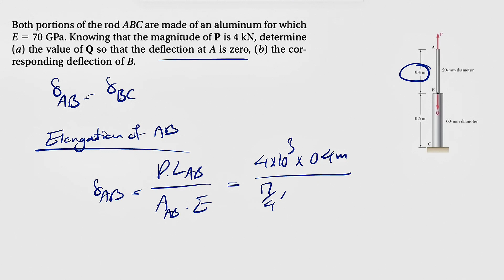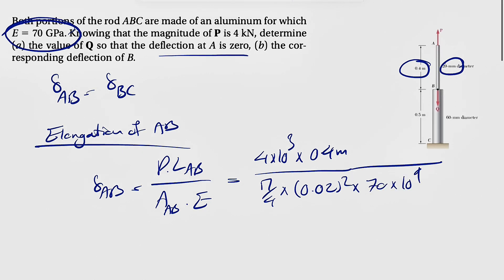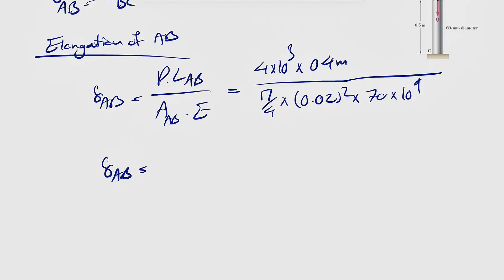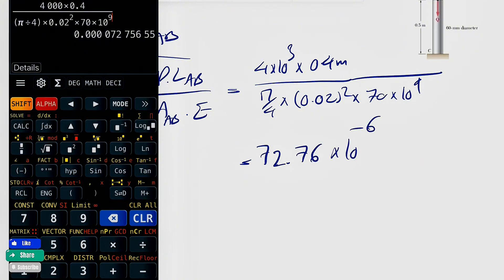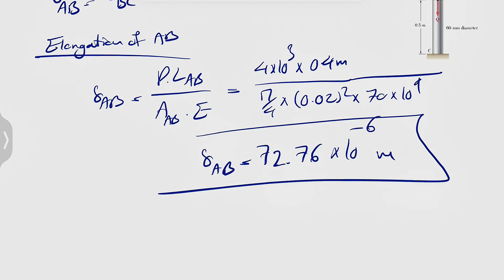For finding the area, we have pi over 4 times the diameter. The diameter is 20 millimeters, so 0.02 squared times the elastic modulus, which is 70 gigapascals, 70 times 10 to the 9. This should give us the deflection at A. Let's calculate this. So 4000 times 0.4 divided by pi divided by 4 times 0.02 squared times 70 times 10 to the 9. This is going to be 72.76 times 10 to the minus 6 meters. So we have the deflection from AB.